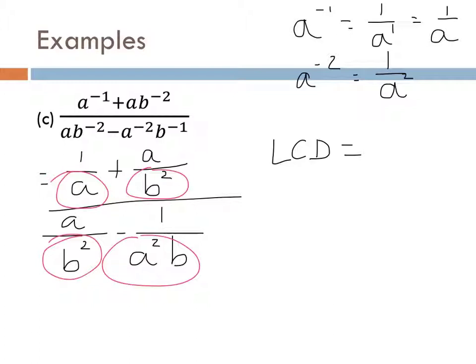Here's the first example. Set it up like long division with the divisor on the left. Make sure powers are arranged from highest to lowest — cube, square, x, constant. The first step: divide the first term of the dividend by the first term of the divisor. What's x cubed divided by x? X squared. Put that on top, lined up with the x squared column. Then multiply x squared by the entire divisor: x squared times x is x cubed, x squared times 2 is 2x squared. Put those under the corresponding terms.